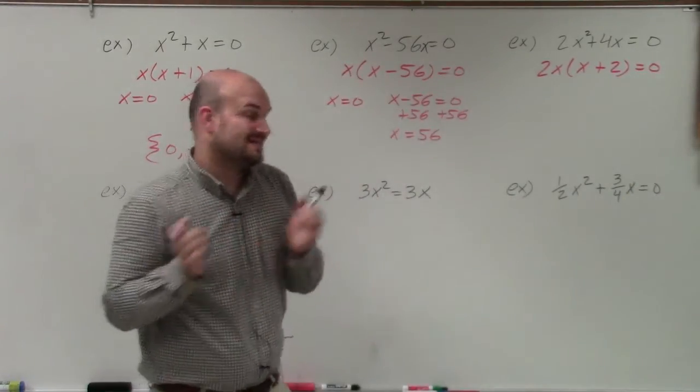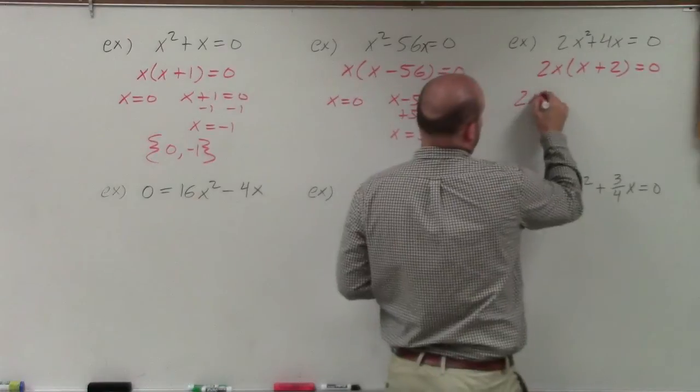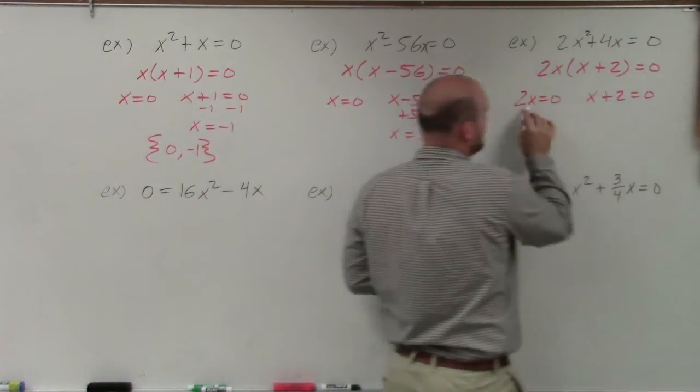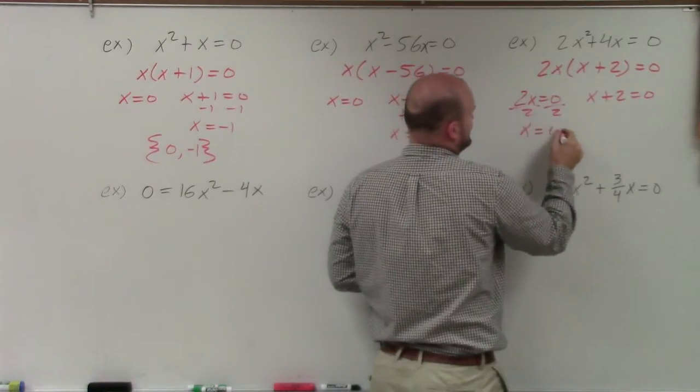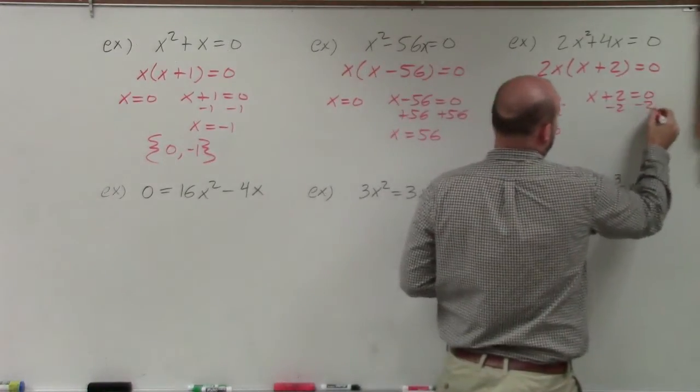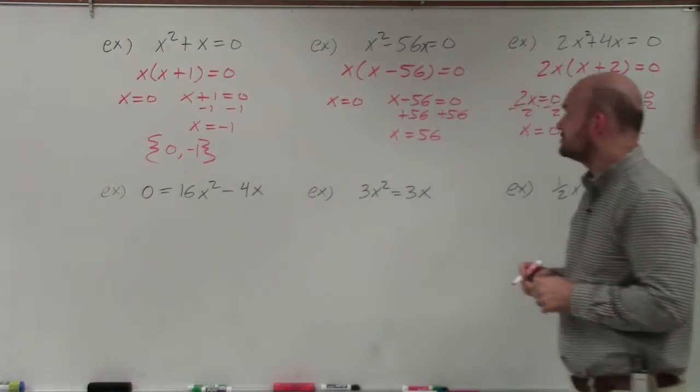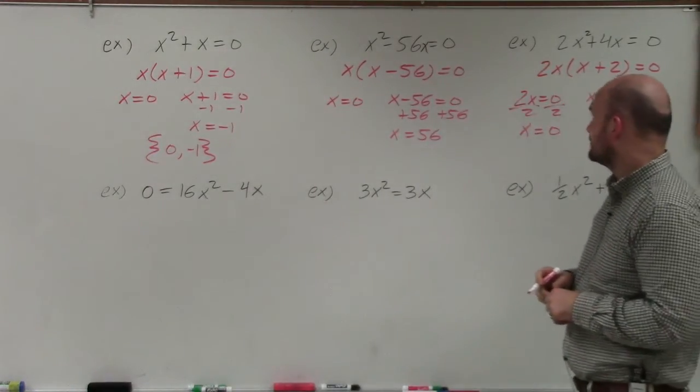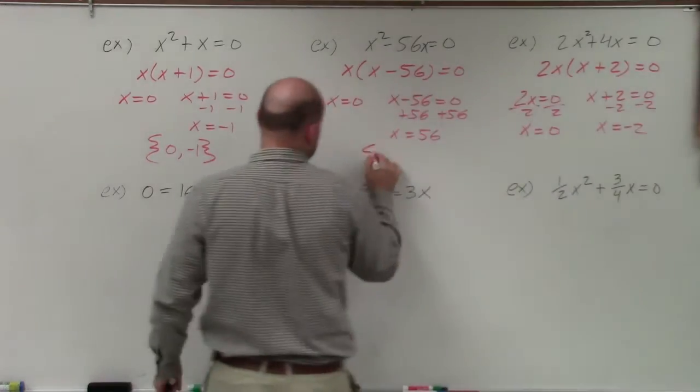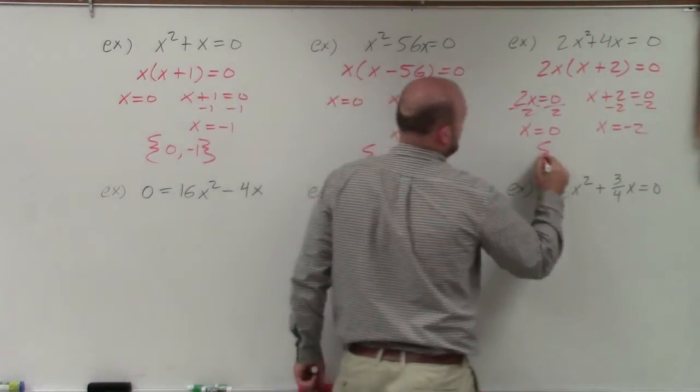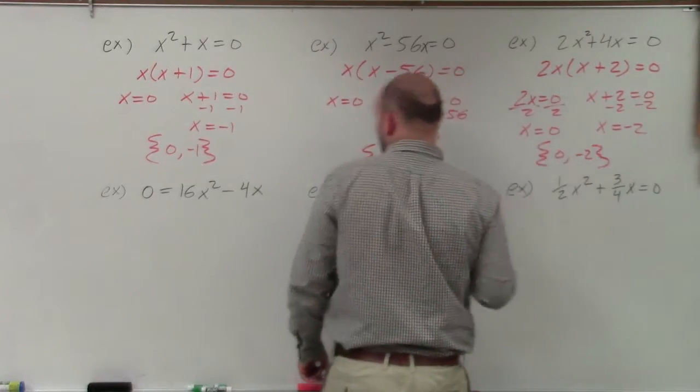I set these both equal to 0. So I'll have 2x equal to 0, and x plus 2 equals 0. Here I can divide by 2, and I get x equals 0. Here I subtract 2, and I get x equals negative 2.